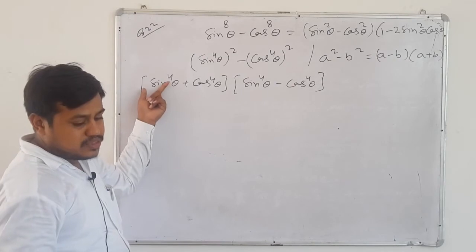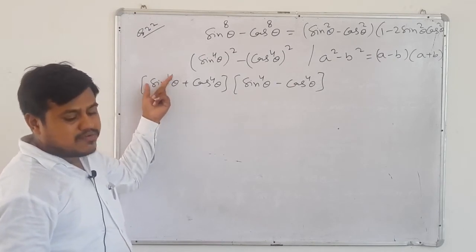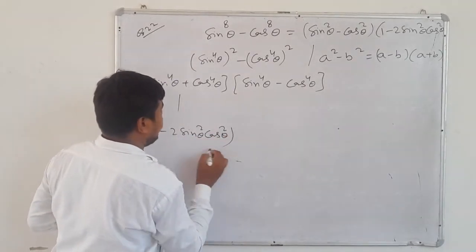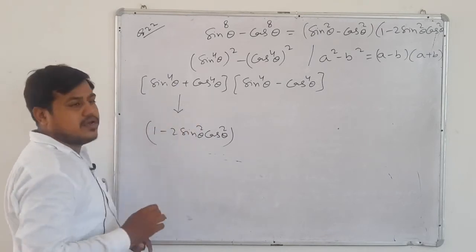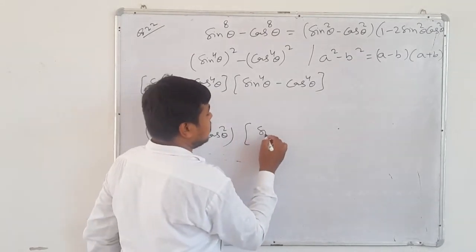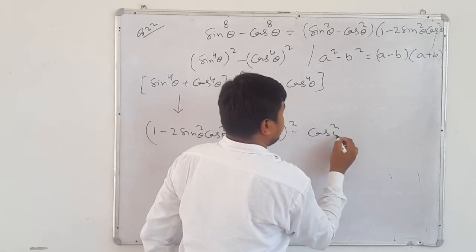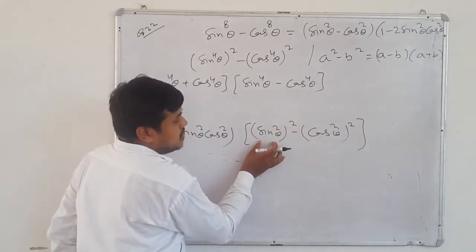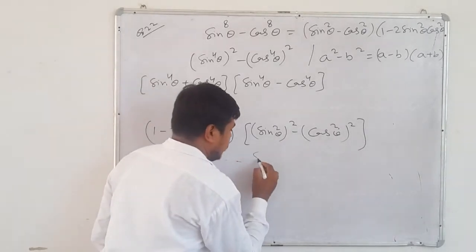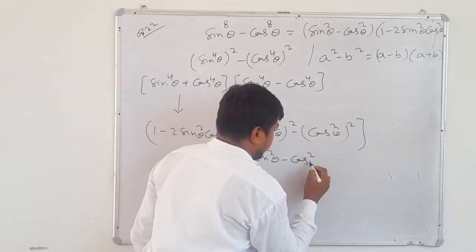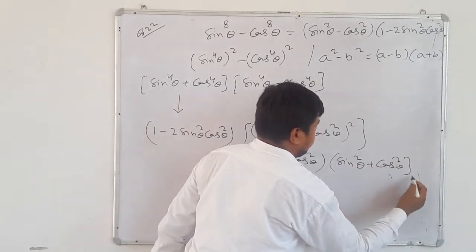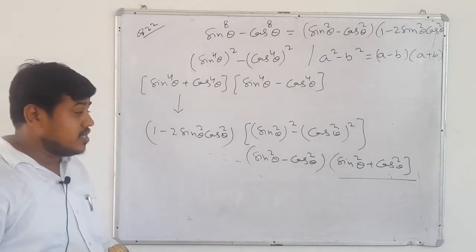You can refer to question 12 for that. Now solve sin⁴θ - cos⁴θ further using the same algebraic identity: write it as (sin²θ)² - (cos²θ)², again applying a² - b² = (a - b)(a + b). This gives (sin²θ - cos²θ)(sin²θ + cos²θ). And sin²θ + cos²θ = 1.